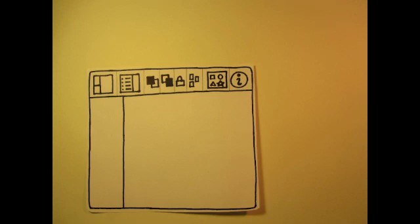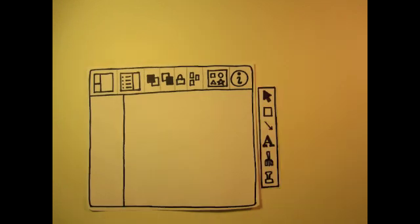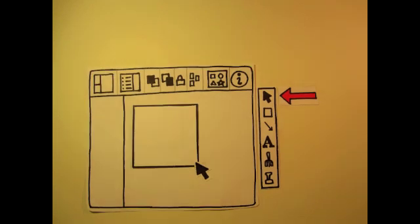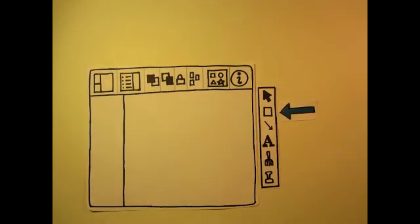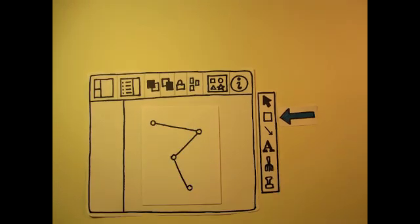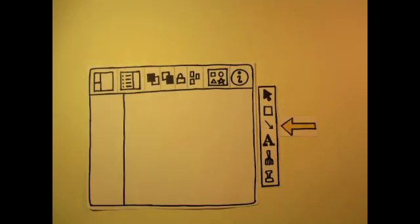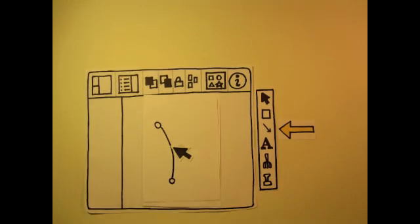This is what a blank document looks like, and this is the toolbar. The first tool is the selection tool, which allows you to select, resize, and reshape objects. The next tool allows you to create your own shapes, which can be as unique as you like. The line tool allows you to draw lines, which you can then drag into curves.